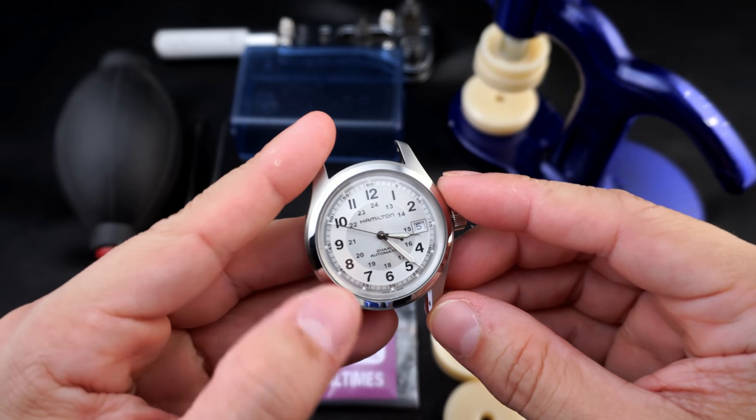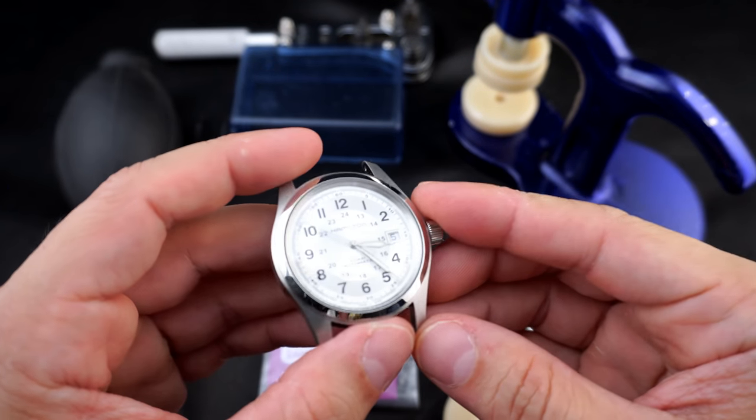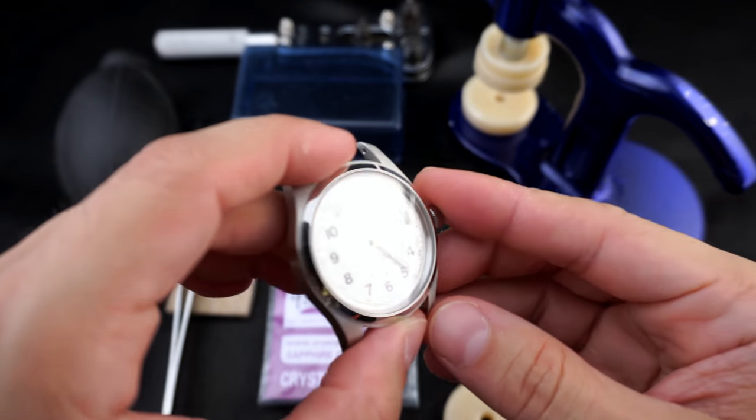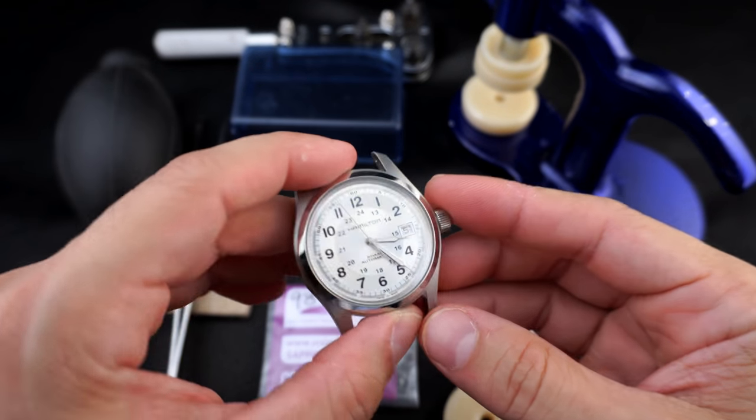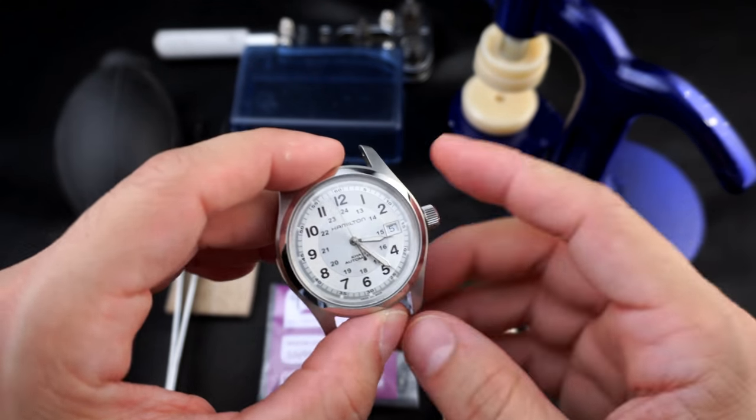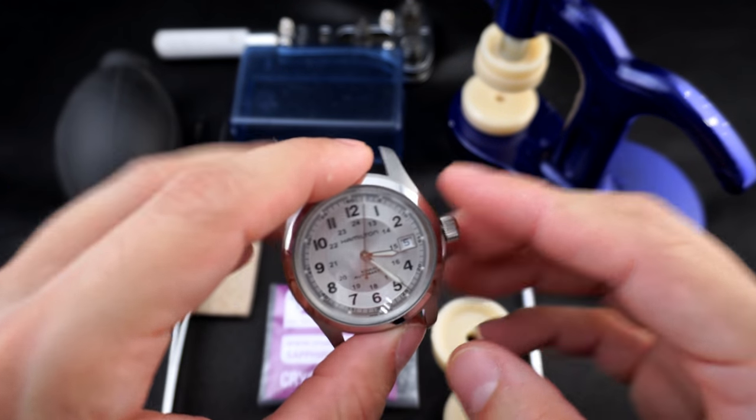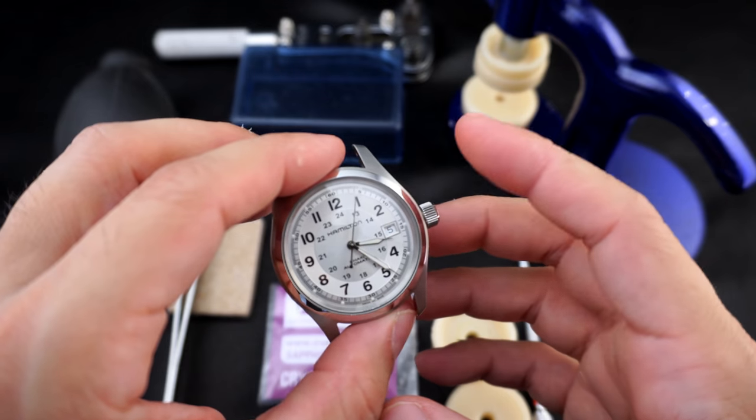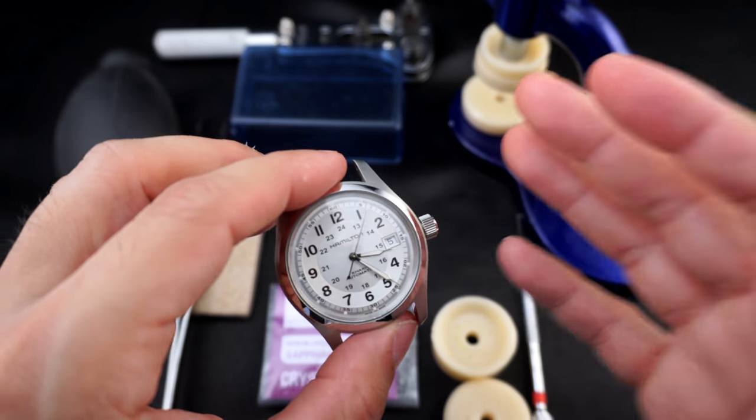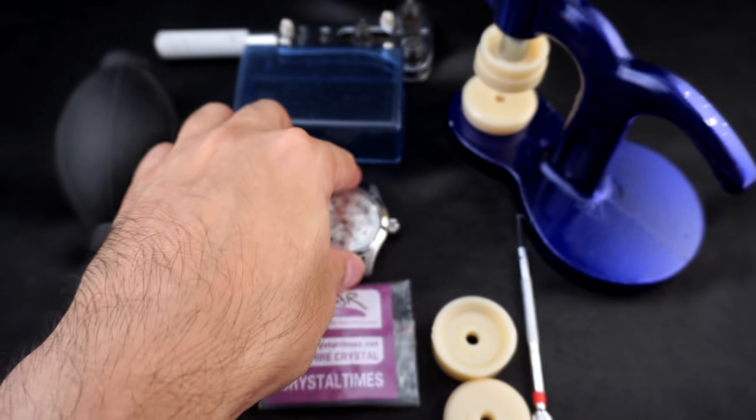Now, this watch already has a sapphire dome, but it's not AR-coated, so there's a lot of glare and reflection. The silver dial watch isn't so bad, but the black dial is very bad. This procedure will work for that one as well.